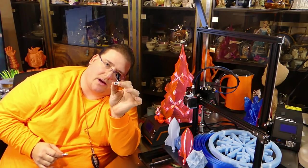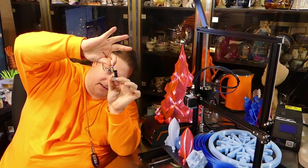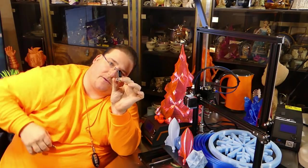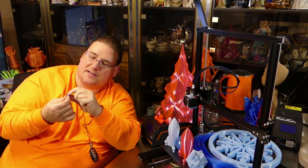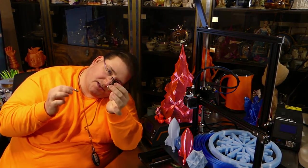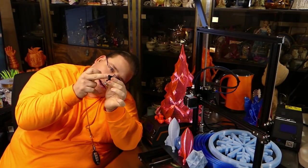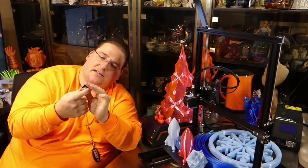So the way it works is the Bowden tube only comes in this far. The Bowden tube stops here. On the CR10, the Bowden tube goes all the way into the nozzle, all the way down into the hotend, just above the nozzle. While this one stops right there, right above that first fin on the heat sink.